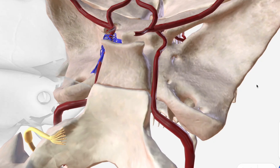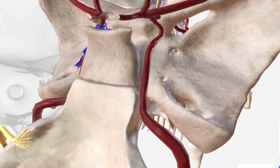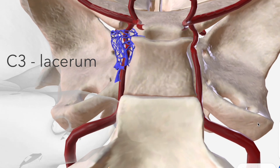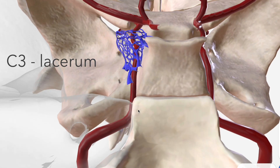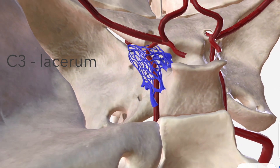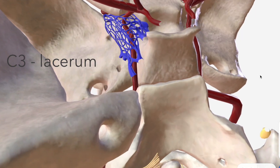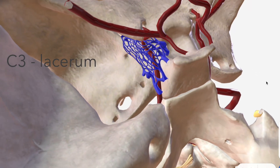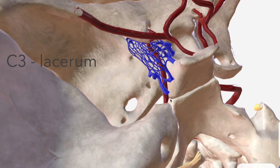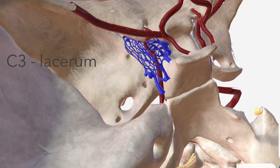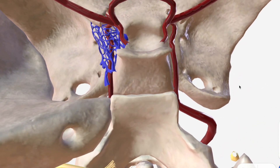C3, the third segment of the ICA, is called the lacerum segment, because it comes through the foramen lacerum — the foramen made between the sphenoid, the occipital, and the temporal bones. So the lacerum segment of the internal carotid passes through that foramen lacerum.